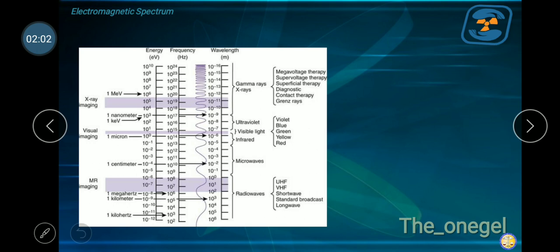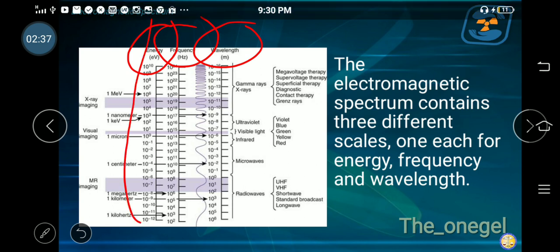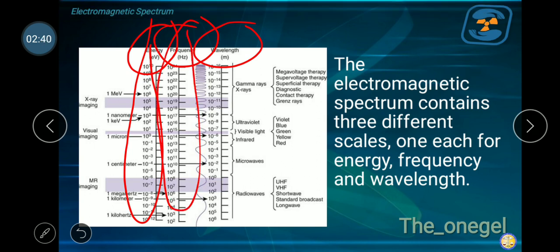As you can see, this is taken from your book, from our reference. It says here that the Electromagnetic Spectrum contains three different scales: one each for energy, frequency, and wavelength. These are the three parameters in the Electromagnetic Spectrum. We'll look at the energy, the frequency, and of course the wavelength of each type of radiation in the Electromagnetic Spectrum.